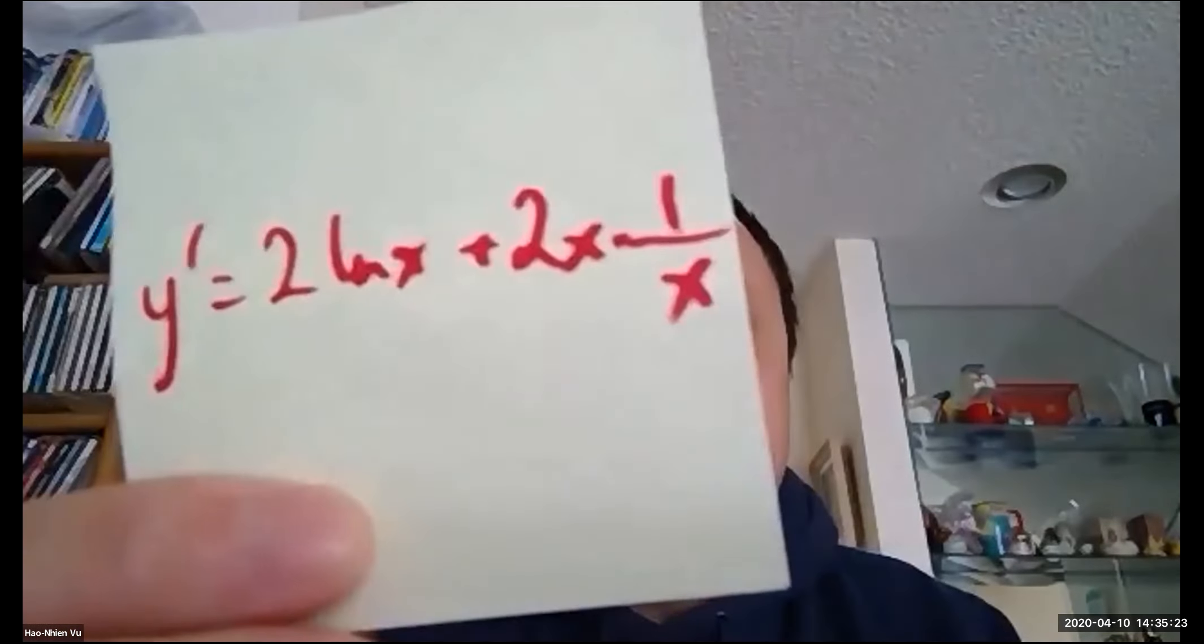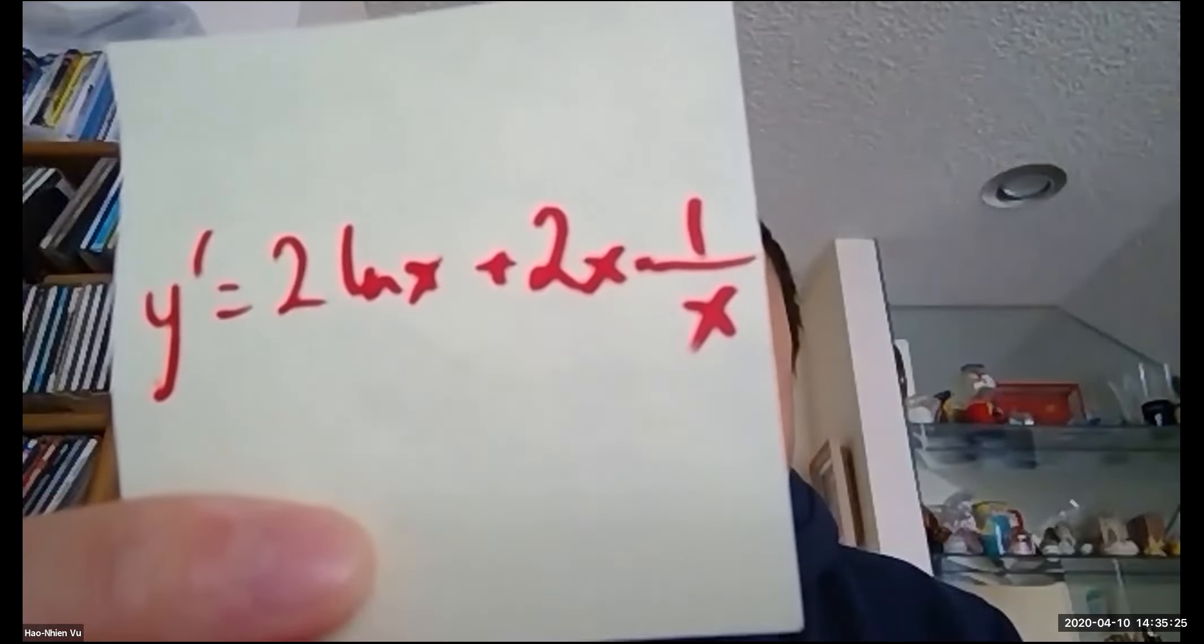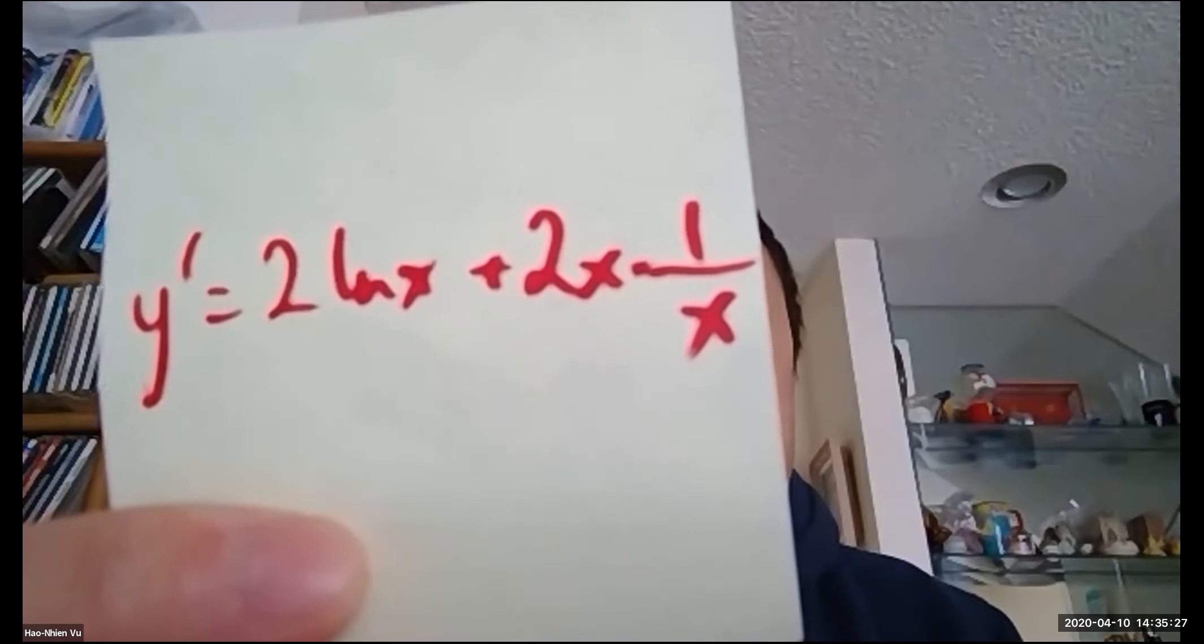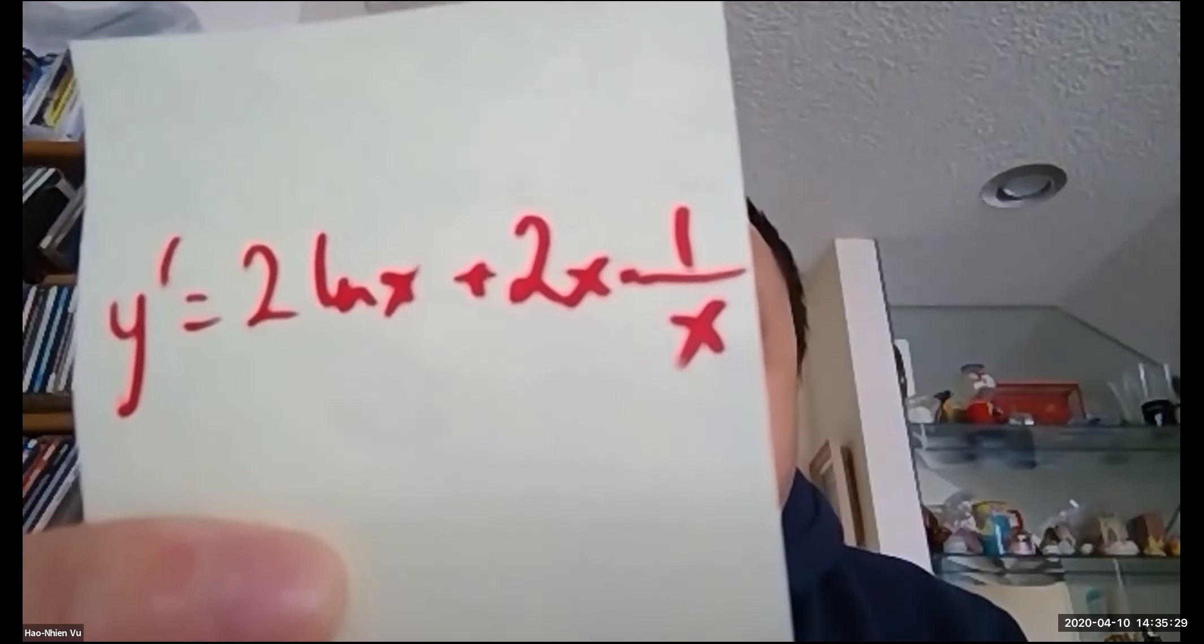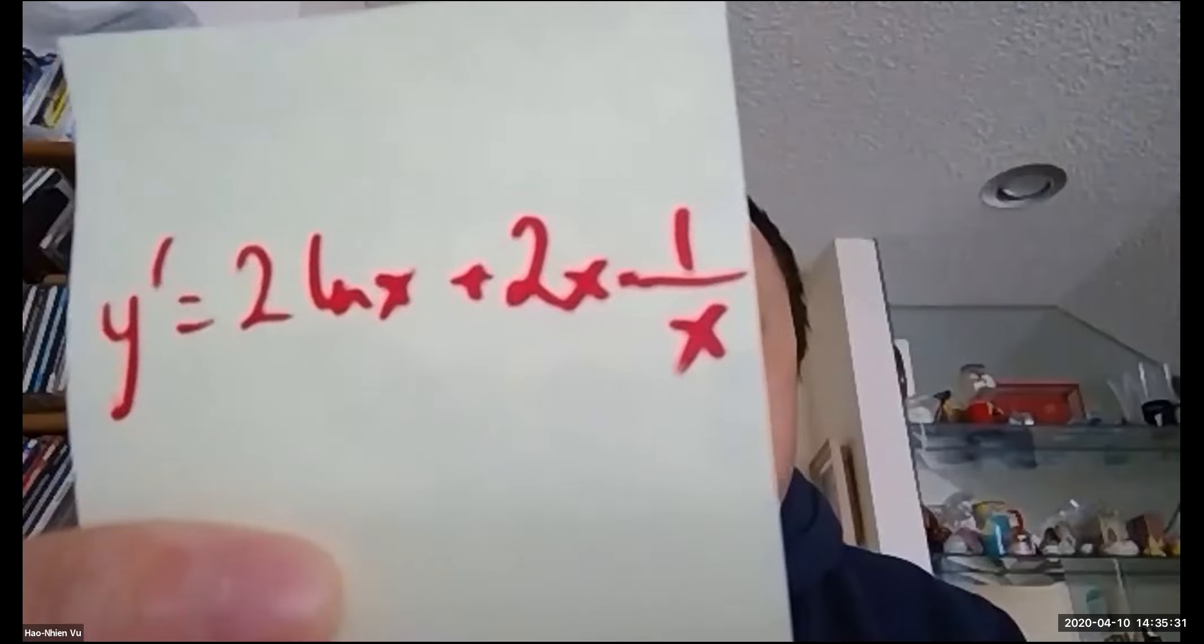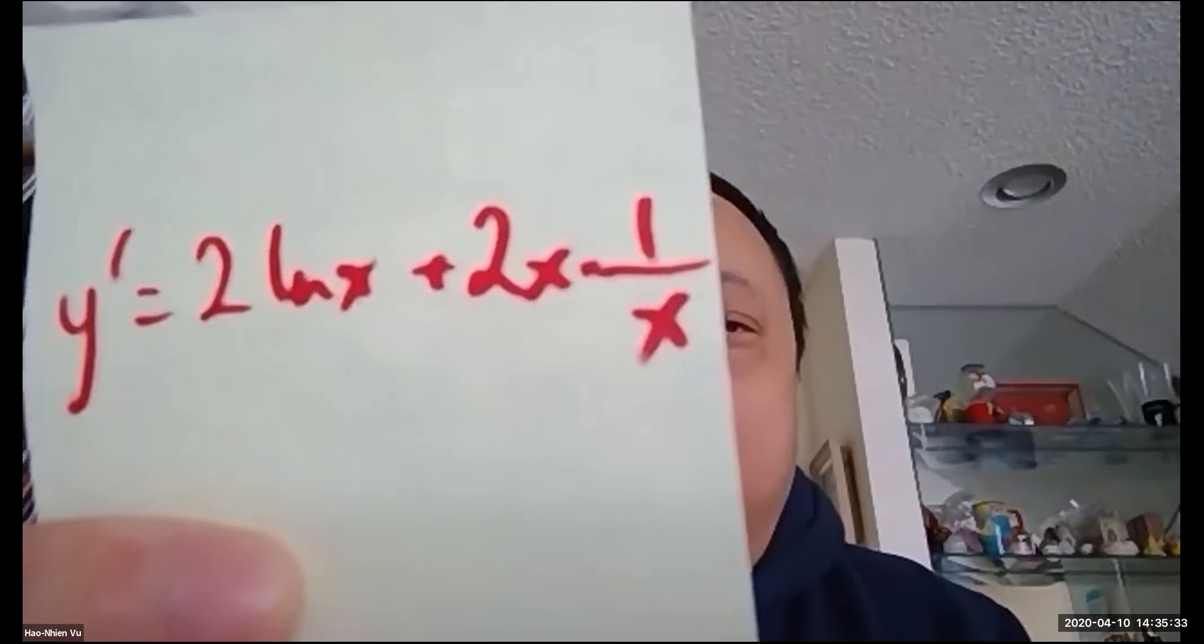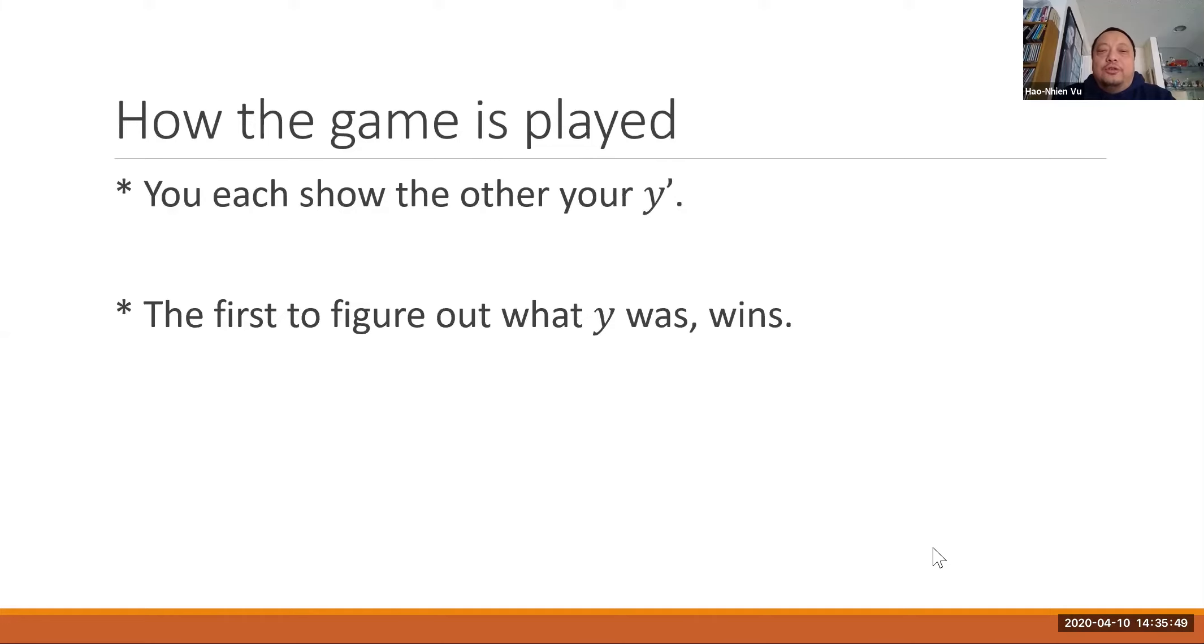And your friend shows you y prime equals two ln x plus two x times one over x. You may notice that the x in two x and the x in one over x could cancel, but I'll talk about that. So each of you are trying to figure out what the other person's y function originally was and the first one to figure it out wins.